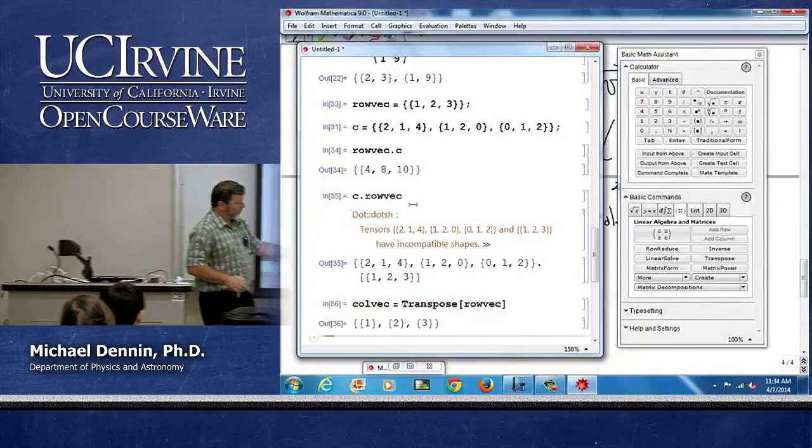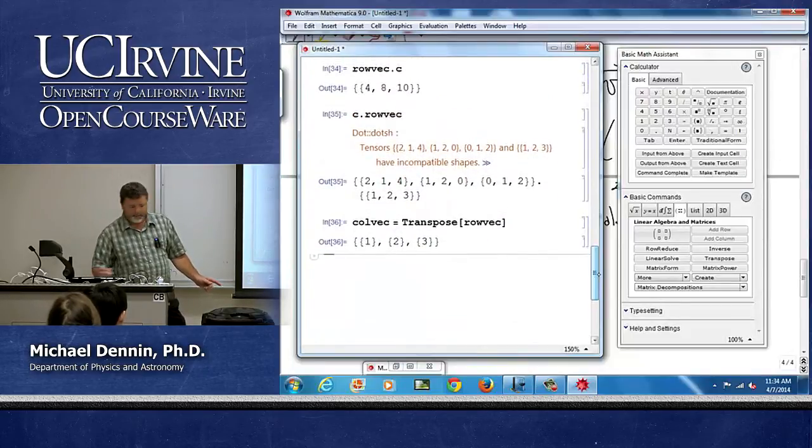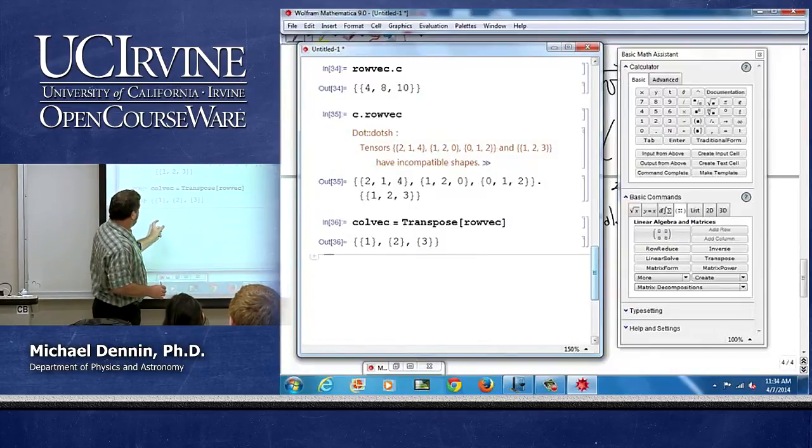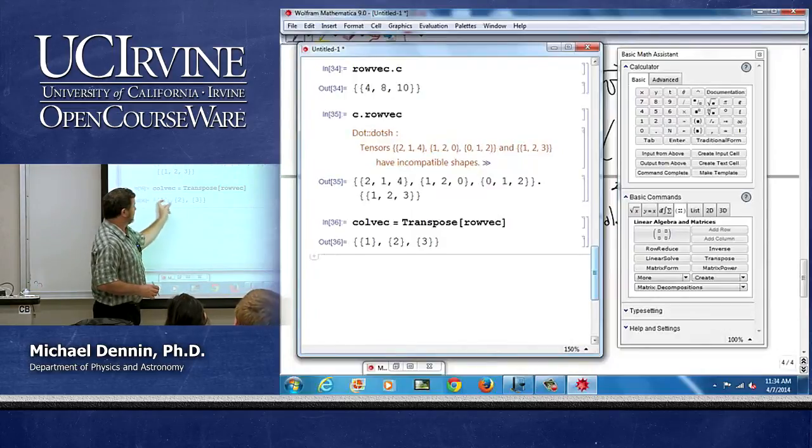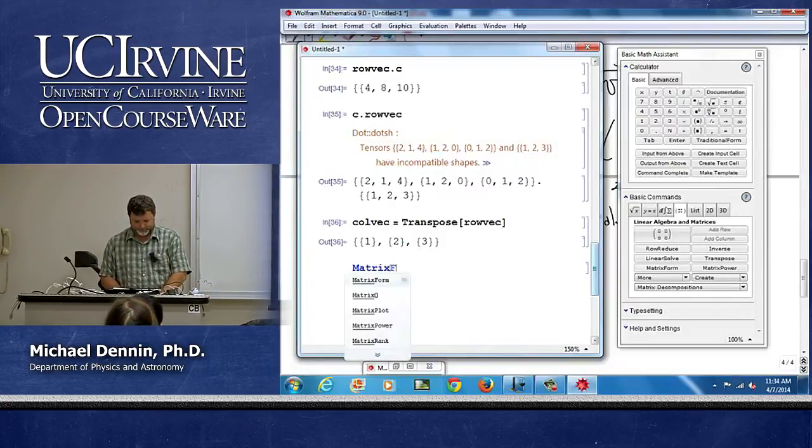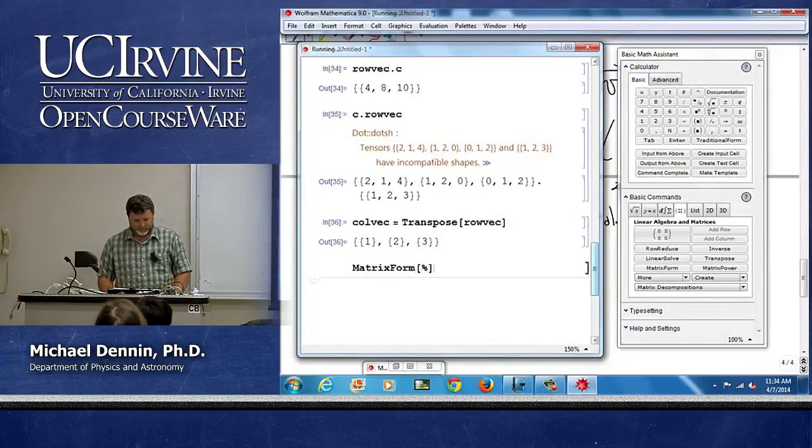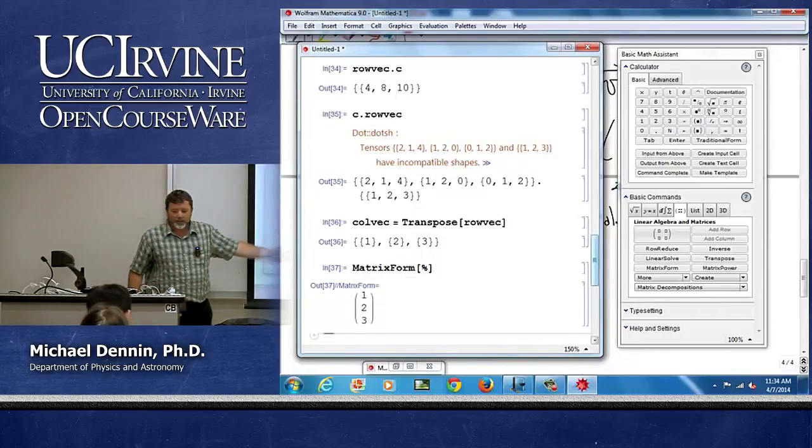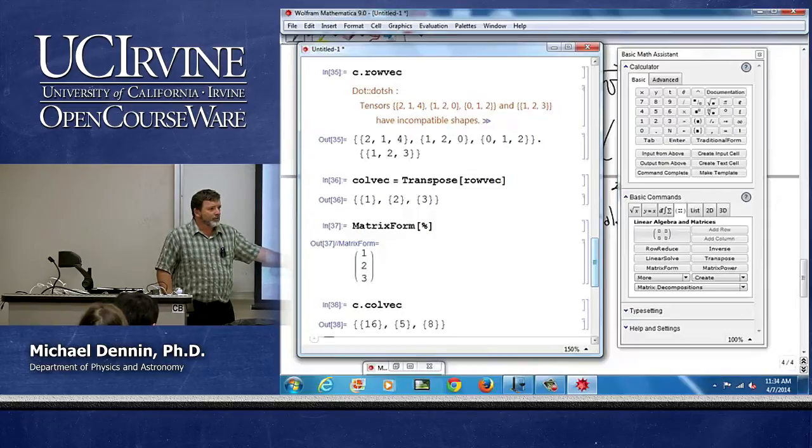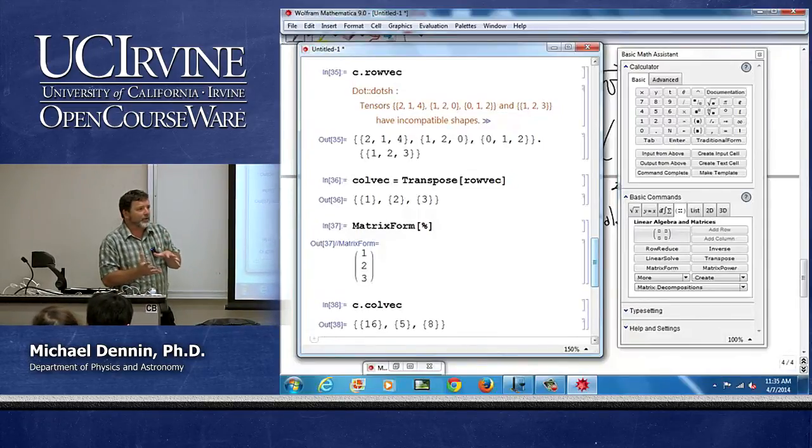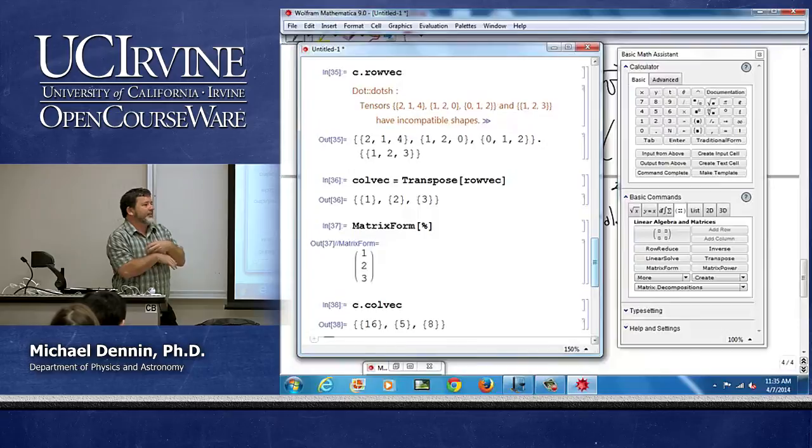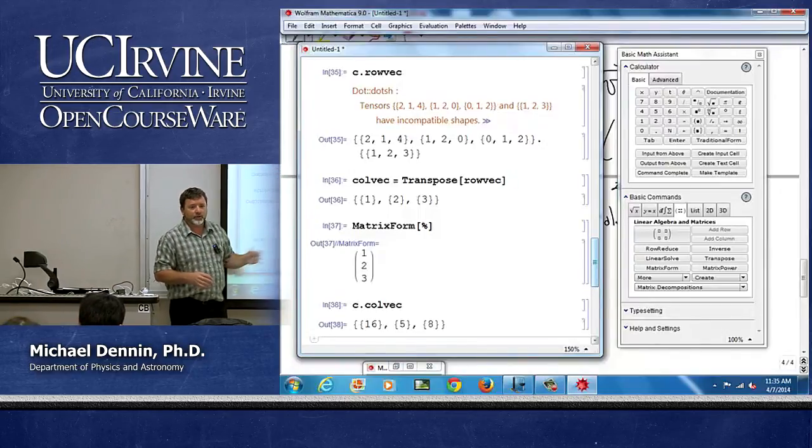If I do C dot row vector, it's going to complain. And notice it tells you tensors. It knows we're trying to use them as tensors. They don't have compatible shapes. I can't multiply this vector on the right of this. Notice with the list at work, it knew how to do that. It knew how to handle it. What I need to do is make a column vector, which is the transpose of the row vector. And notice its format. As we said, the first set of brackets is the rows. So up there, I have the two brackets and then the brackets. Here, I've got little brackets around each one, because each of these is now a column. And if I do matrix form, you can see that it is indeed a column vector. And now I can do C dot column vector. And I get out a column vector.